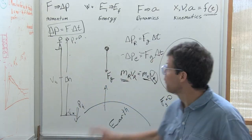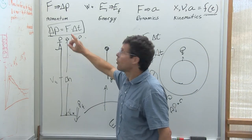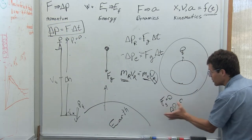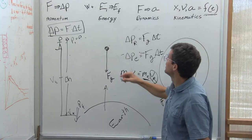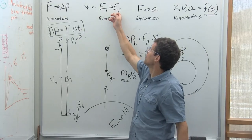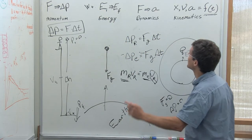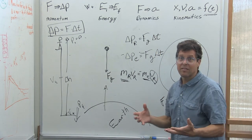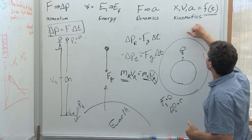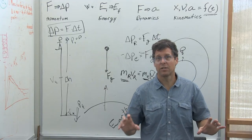So these are your four lenses. You motivate momentum when you can say forces change momentum, or if there's no force, there's no change in momentum. You motivate energy by identifying a transformation from one energy or work to a final energy. You motivate dynamics by saying forces are accelerating an object. And you motivate kinematics by looking at motion as an explicit function of time.